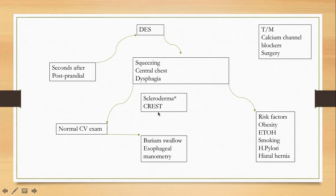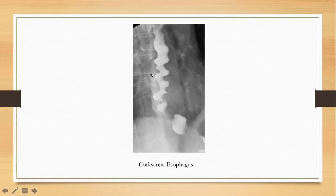If you suspect scleroderma based on these findings combined with diffuse esophageal spasm, you can run special confirmatory tests. Here is a barium swallow showing corkscrew esophagus — you can see significant spasm at multiple segments, which is a very characteristic appearance of diffuse esophageal spasm.